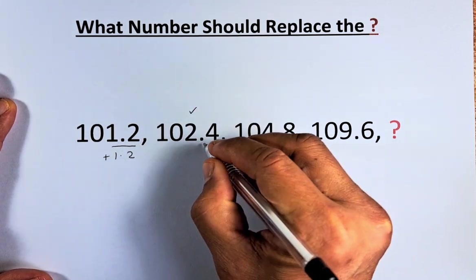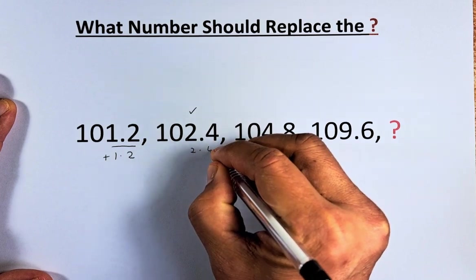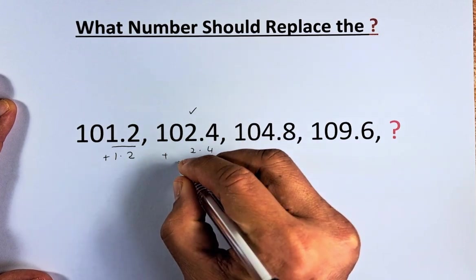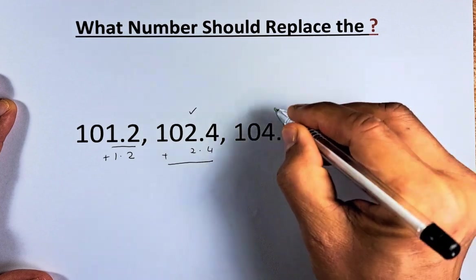Similarly, if you add 102.4, the last two digits is 2.4, you add them up, you will get 104.8.